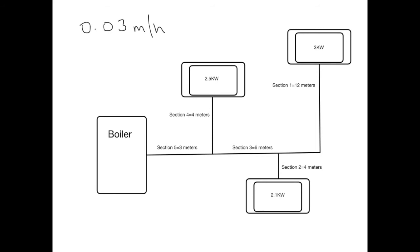For section 1 we have 12 meters of pipe run, but that doesn't include any pressure loss due to fittings. The standards quote to add a further 33% for a run that has an average number of fittings, or add 50% extra for a run that has quite a lot of fittings. In this case, adding a further 33% gives us an effective pipe length of 16 meters.